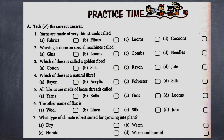Question number two: weaving is done on special machines called — A) jeans, B) looms, C) combs, D) needles. Third: which of these is called a golden fiber? A) cotton, B) silk, C) rayon, D) jute.